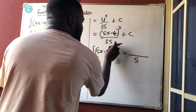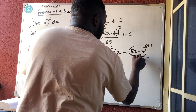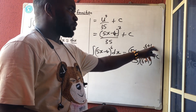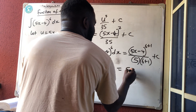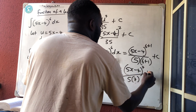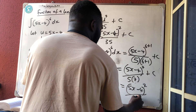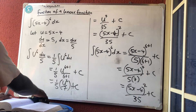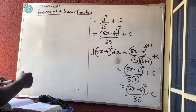The integral of something raised to power 6 gives that thing raised to power 6+1, divided by 6+1, plus a constant. Differentiating (5x − 4) gives 5, which goes in the denominator. So the result is (5x − 4)⁷ divided by 5·7, plus a constant — which is (5x − 4)⁷/35 plus a constant. We differentiate the bracket and use it to divide the integral of everything.